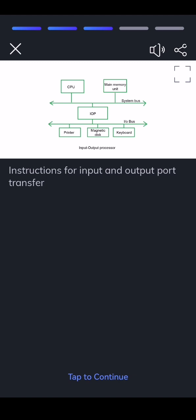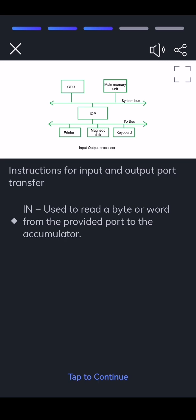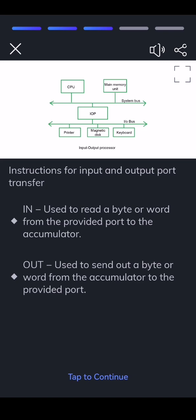Instructions for input and output port transfer: IN — used to read a byte or word from the provided port to the accumulator. OUT — used to send out a byte or word from the accumulator to the provided port.